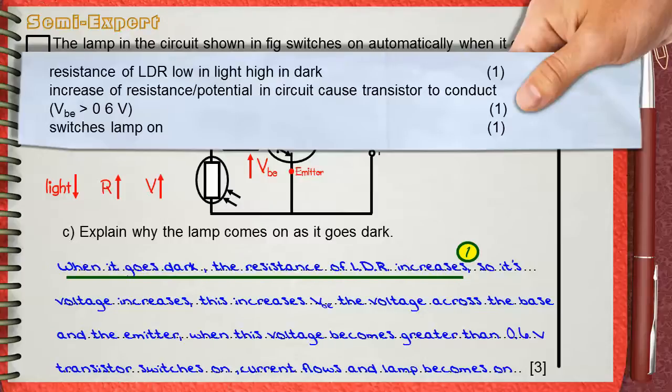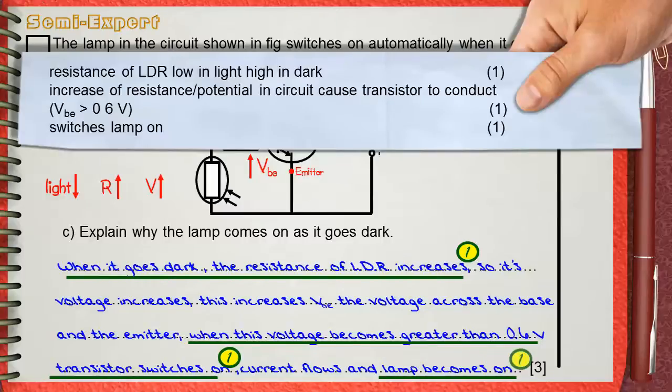This is exactly what we said here. When this voltage becomes greater than 0.6 volts, transistor switches on. The third mark is for saying that the lamp will switch on after the voltage across the base and the emitter becomes greater than 0.6 volts. This is what we said here, lamp becomes on. These are the three marks of the question.